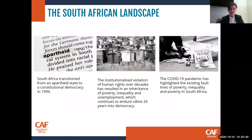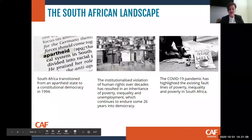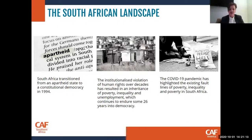I'm going to put the case for an enhanced social justice focus in philanthropy. Just a couple of comments on the South African landscape. As you all know, South Africa transitioned from an apartheid state into a constitutional democracy in 1994. However, the institutionalized violation of human rights over decades has resulted in an inheritance of poverty, inequality, and unemployment, which sadly continues to endure some 26 years into our democracy. The COVID-19 pandemic has likewise exacerbated the existing fault lines of poverty and inequality — the poorest of the poor have felt the ripple effects of this pandemic most profoundly.